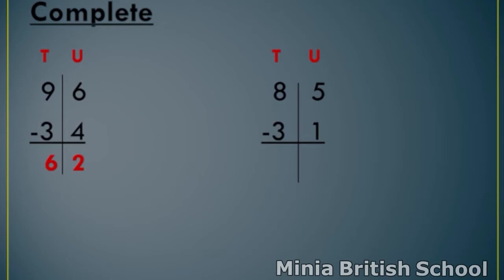And in tens, you have number three and number eight. Where is the smallest number? Three. So, close your fingers and count after three to number eight: four, five, six, seven, eight. How many fingers? Five. So, write five under tens. The answer is 54.